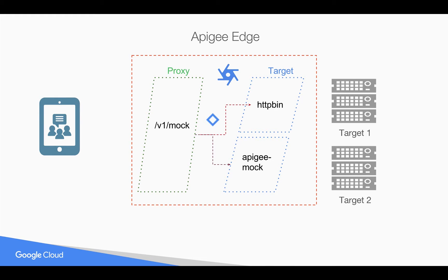Let's assume we want to route based on a query parameter to different target endpoints — you can do that in Apigee Edge. For example, if the query param target equals HTTPbin, then you route to HTTPbin. If query param target equals mock (Apigee mock), you route to Apigee mock. Not only based on query parameters, you can route API calls using any flow variables in Apigee Edge.